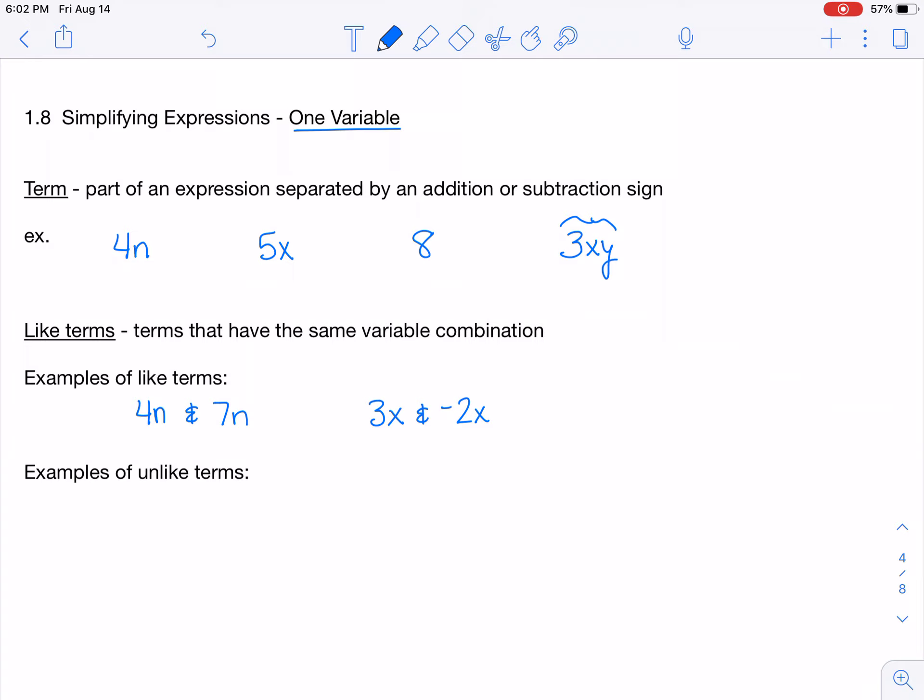When we do get to terms that have more than one variable, in order to be like terms, they have to have exactly the same combination. So if I had 7xy, I could have 10xy. And then we're going to do some examples of unlike terms where you'll see what I mean with that as well.